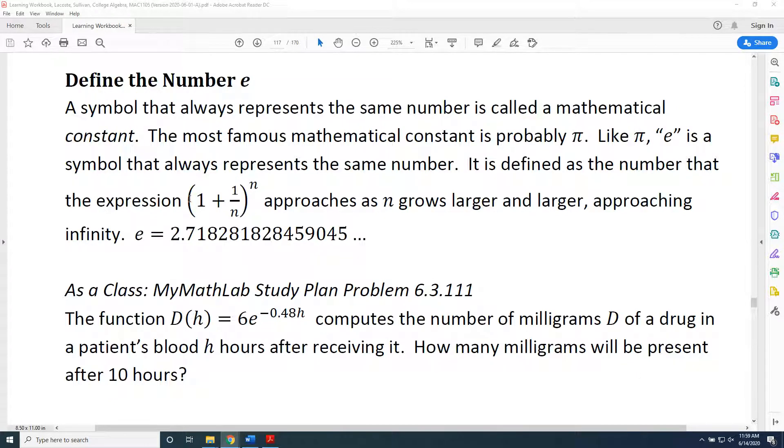Then, looking at this particular expression here, enter in your calculator 1 plus 1 over 100, all in parentheses, raised to the 100th power. When you hit enter, you're going to get a number that is very close to e.